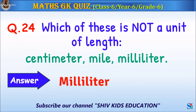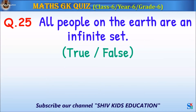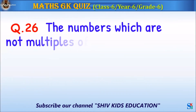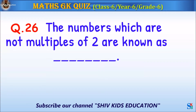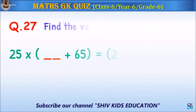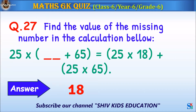Question 25: All people on the earth are an infinite set — true or false? The answer is false. Question 26: The numbers which are not multiples of two are known as what? The answer is odd numbers. Question 27: Find the value of the missing number in the calculation shown. The answer is 18.